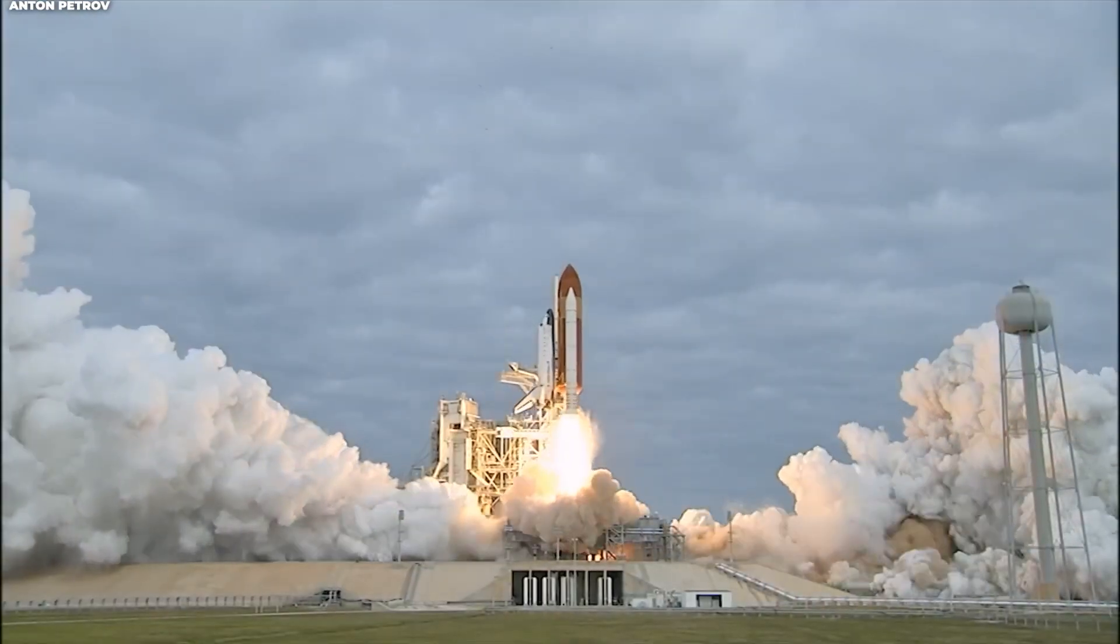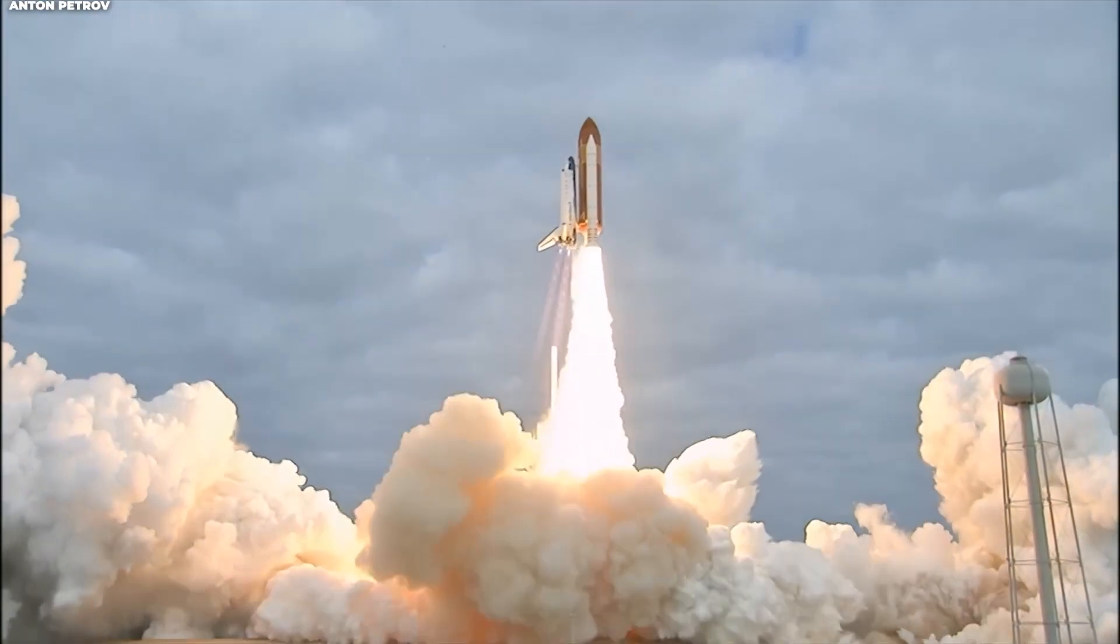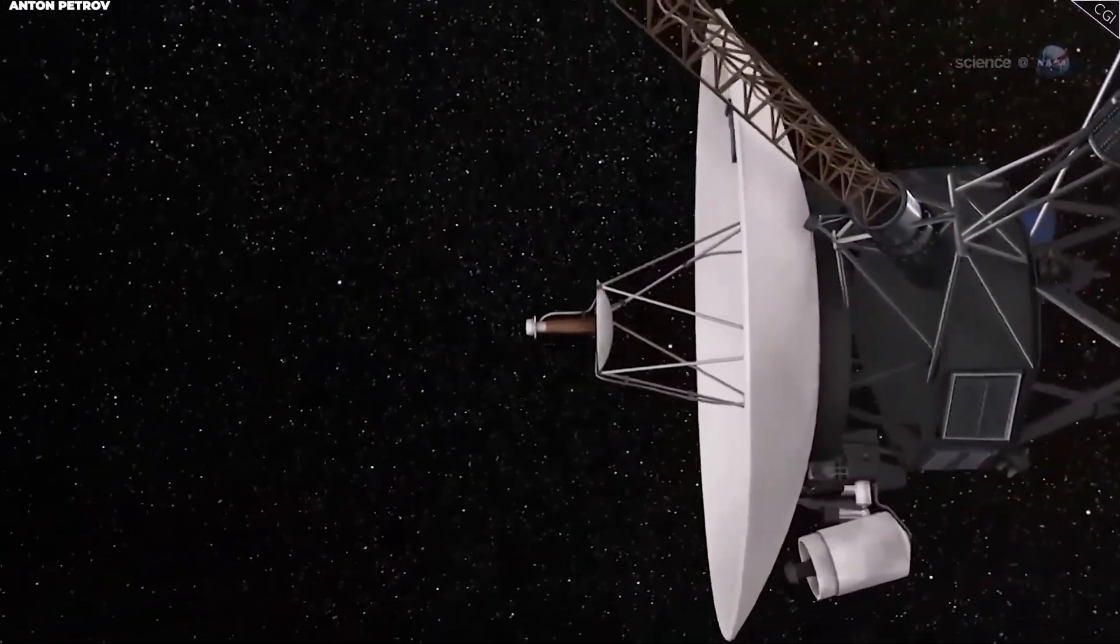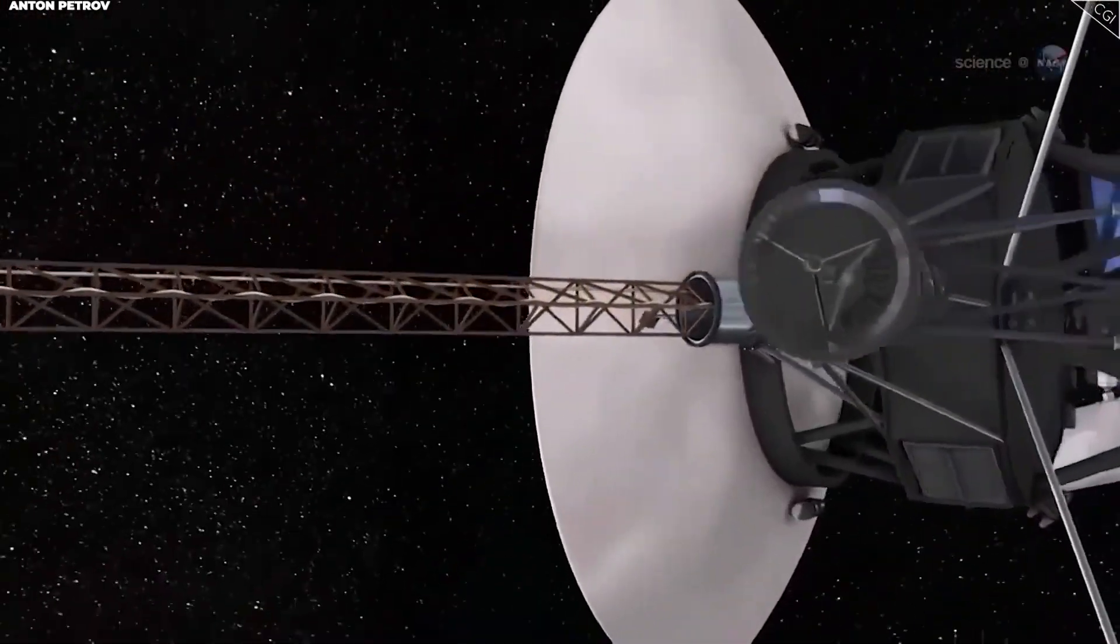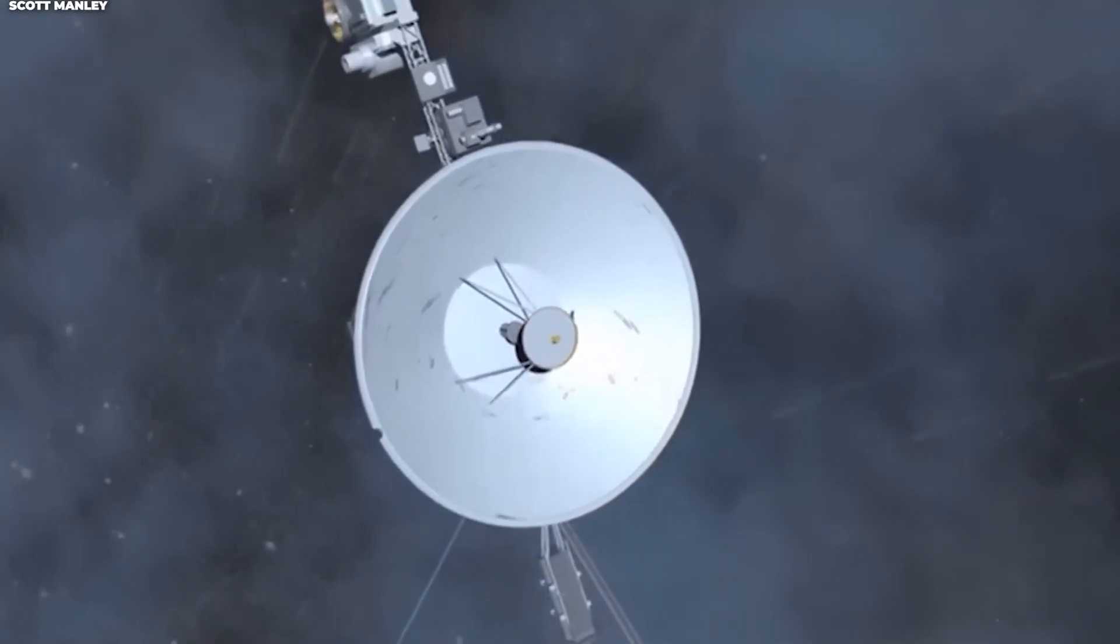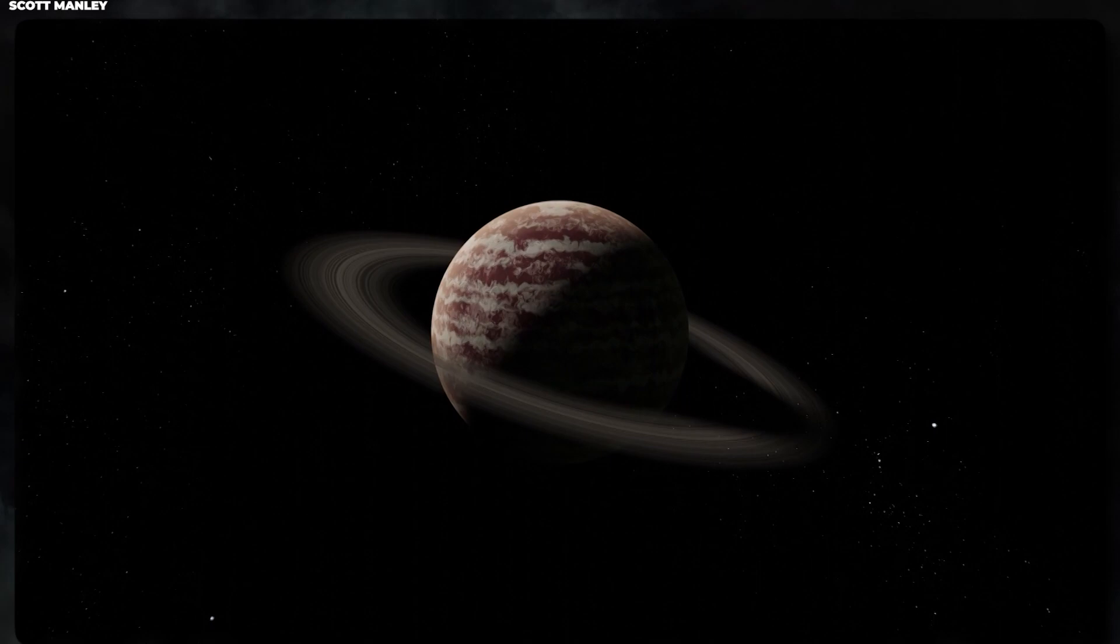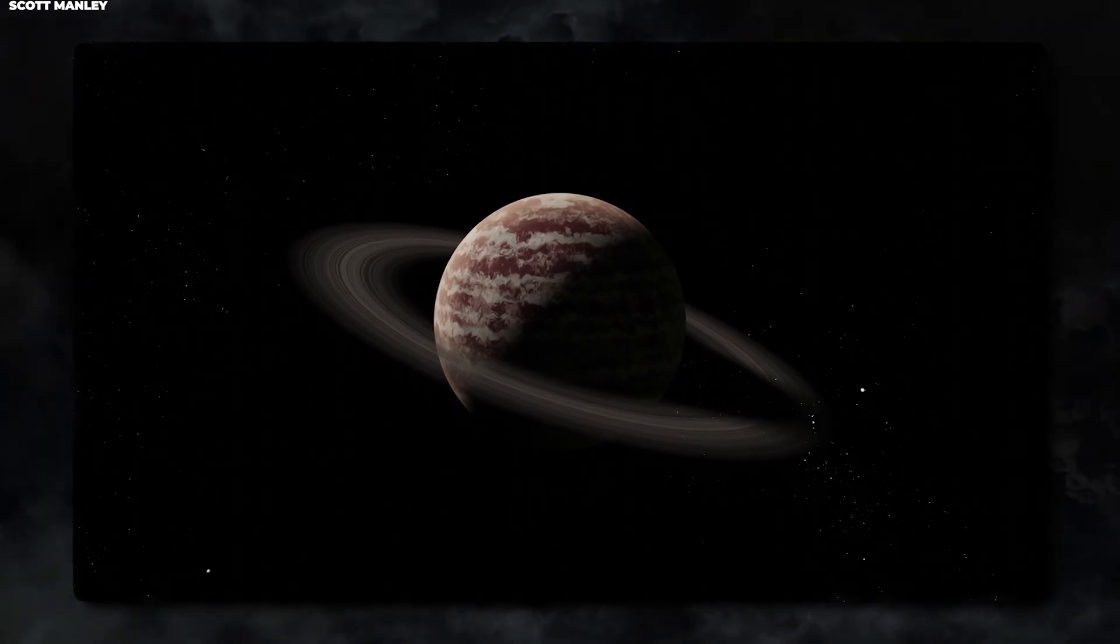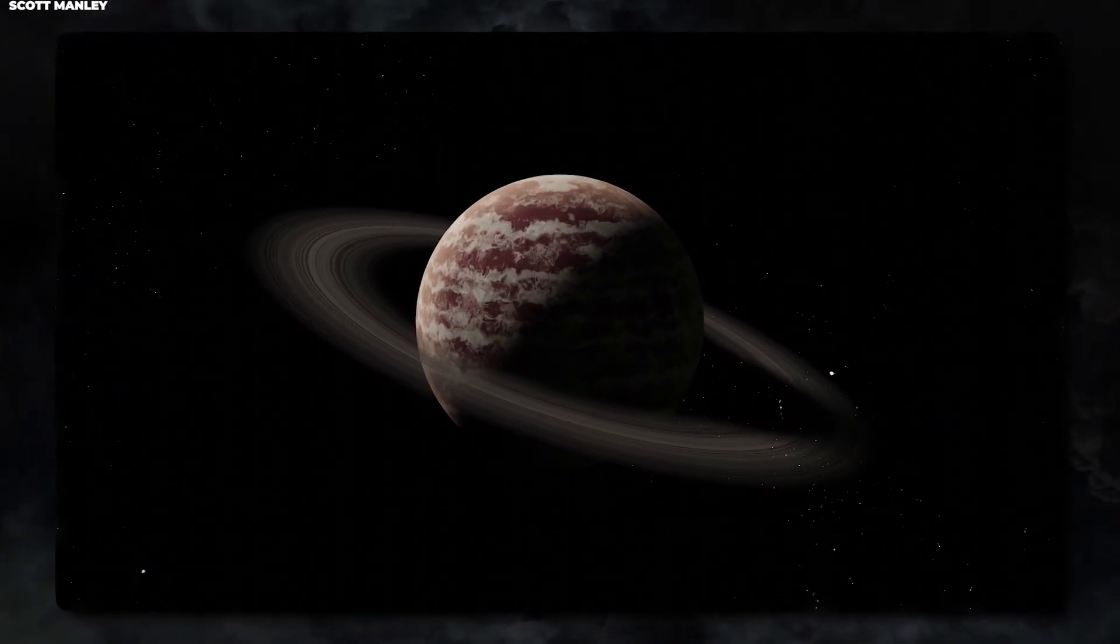Voyager 1 was launched way back on September 5th, 1977. Yes, you heard that right. 1977! This spacecraft is older than most people watching this video. It was originally designed for a simple mission: fly by Jupiter and Saturn, take some pictures, gather some data, and that would be it.